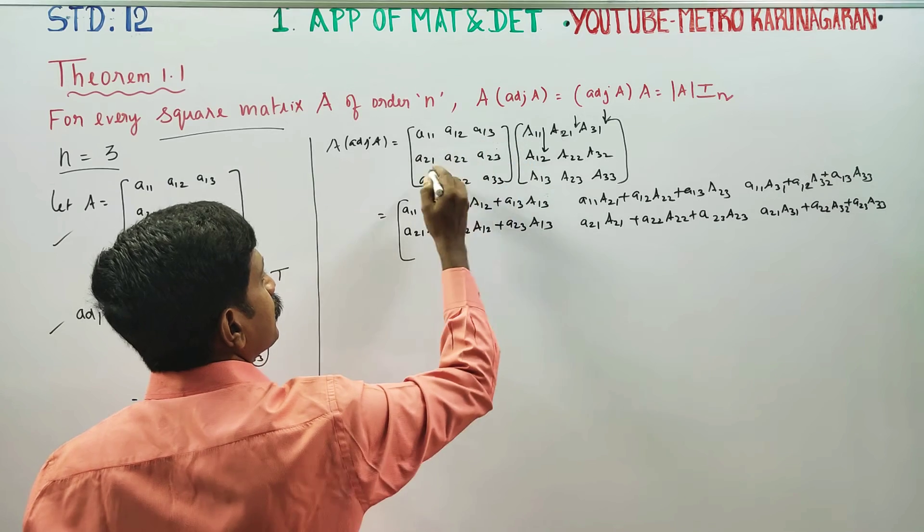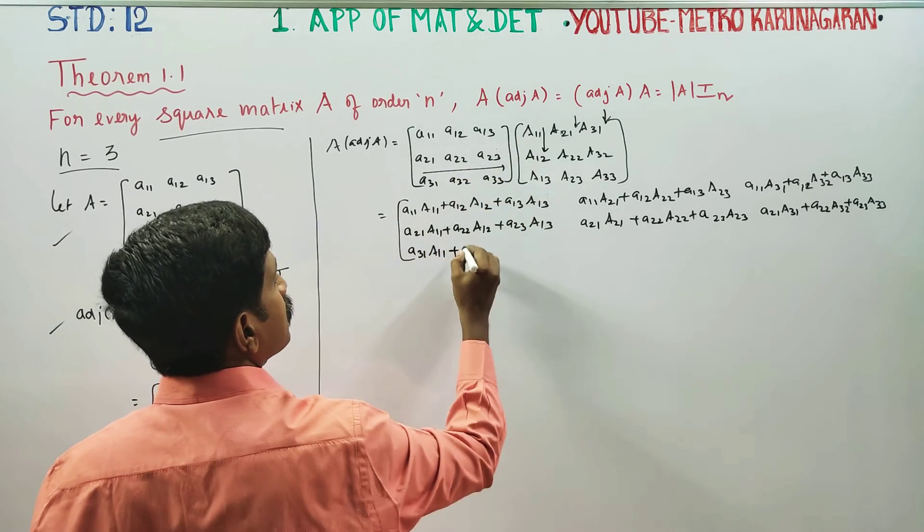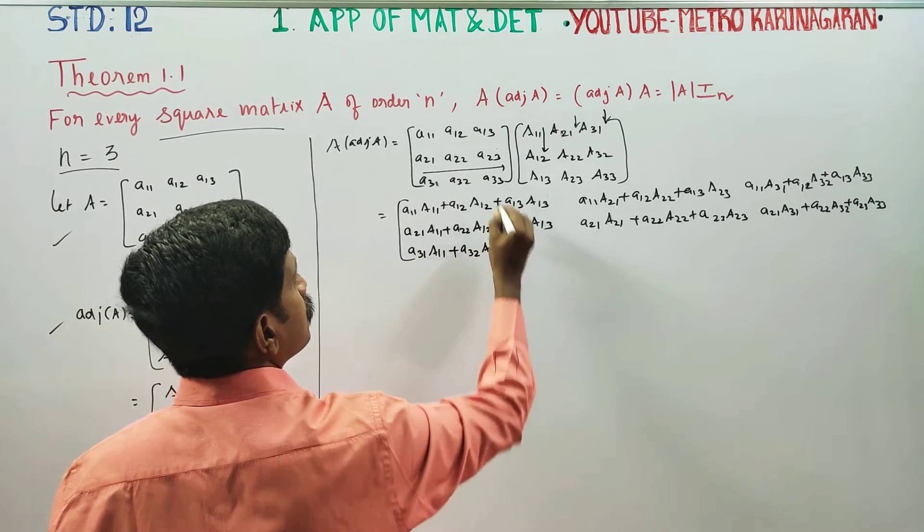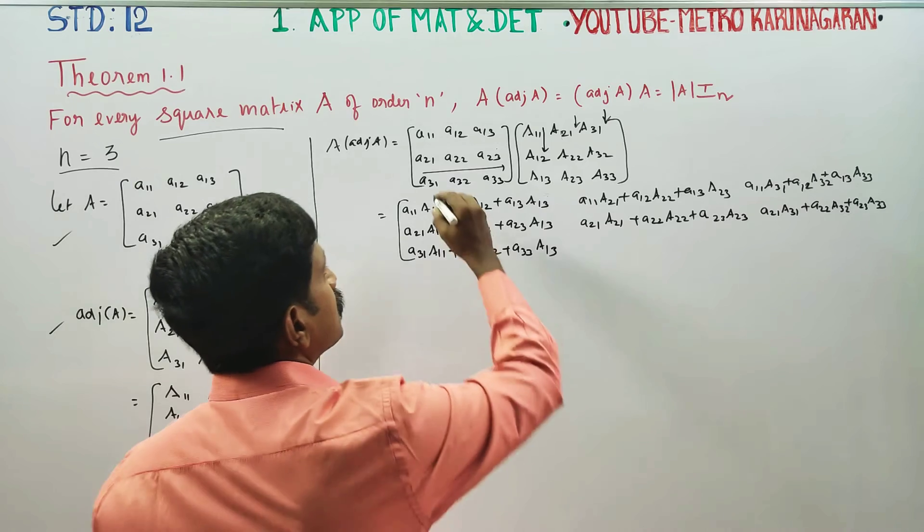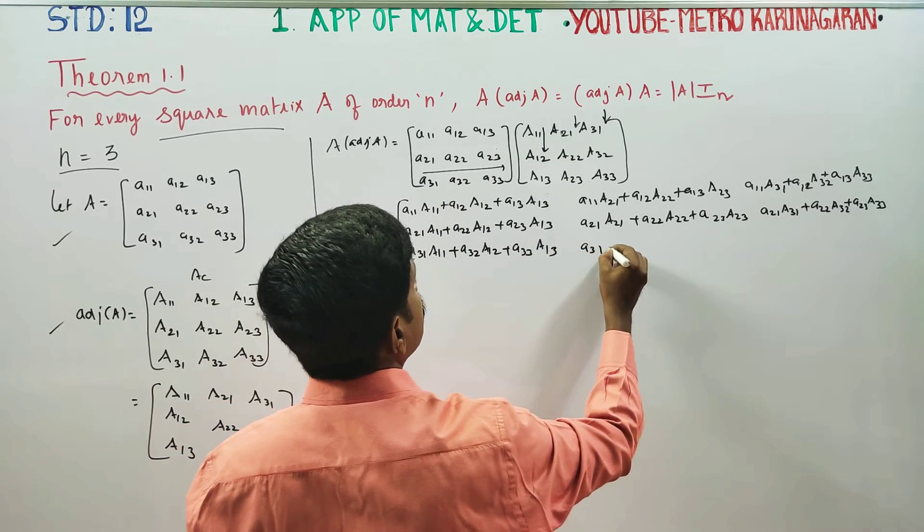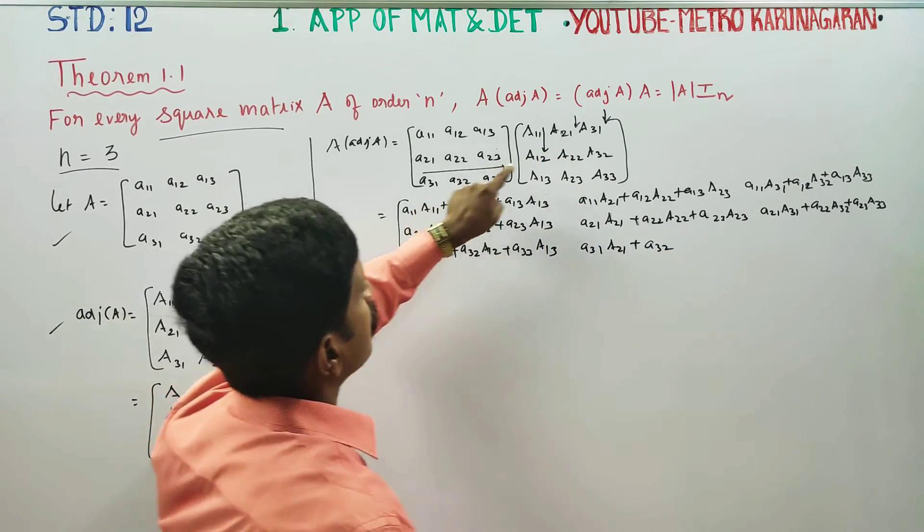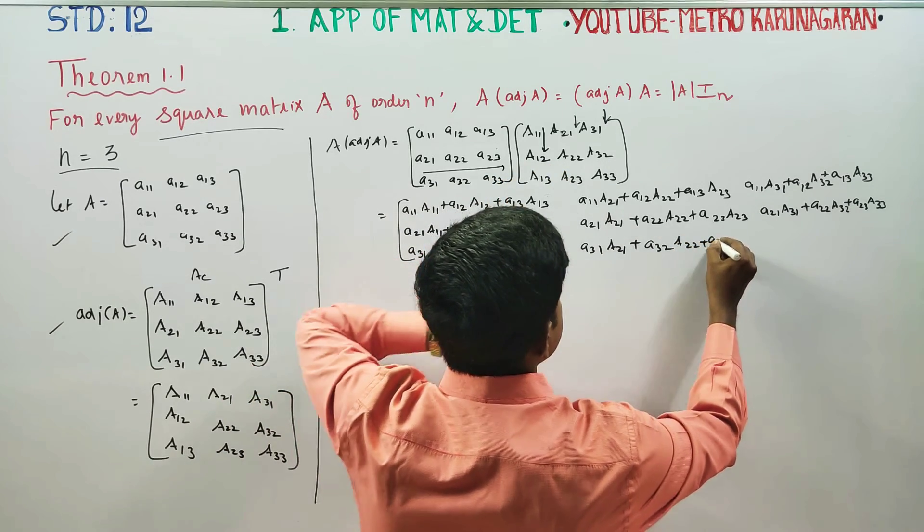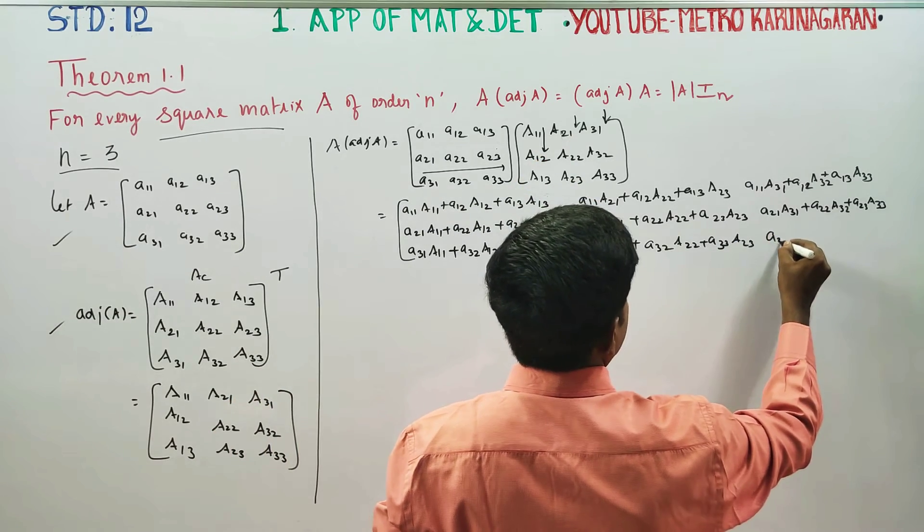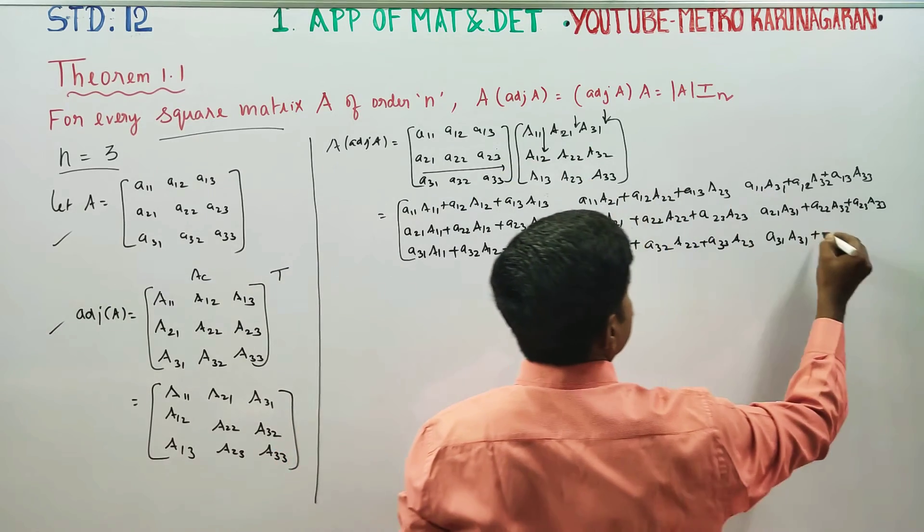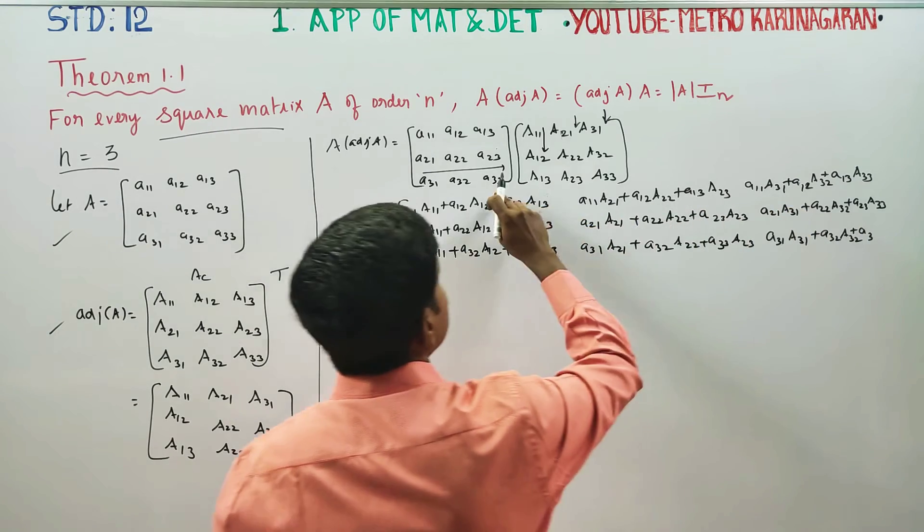Then the last row. Again you start with the first column: a31 times A11 plus a32 times A12 plus a33 times A13. Second column: a31 times A21 plus a32 times A22 plus a33 times A23. Third column: a31 times A31 plus a32 times A32 plus a33 times A33.